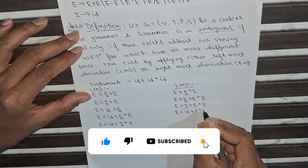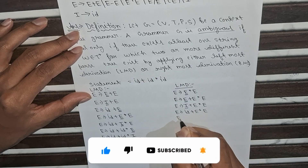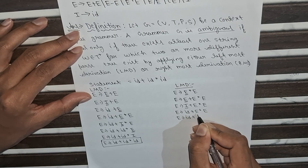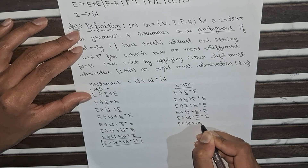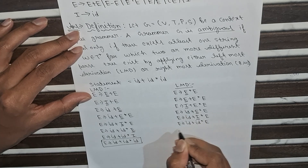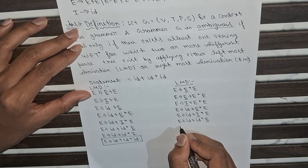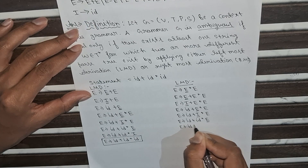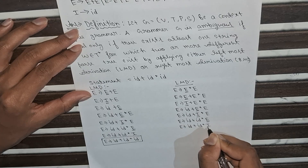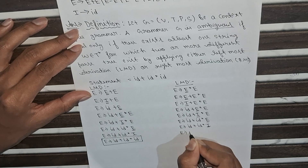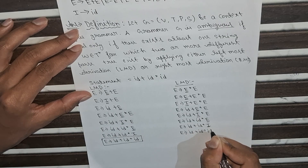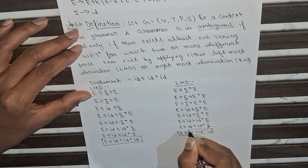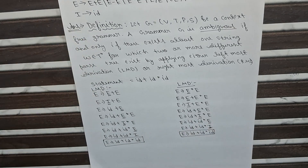Continuing the second LMD, we replace E with I, giving ID + I * E. Since I → ID, we get ID + ID * I. Finally, replacing I → ID, we arrive at the same final statement: ID + ID * ID.